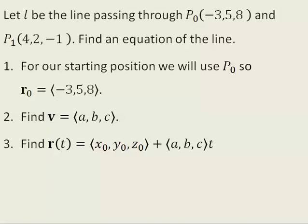For our starting position, we can just use p-naught. So if we choose p-naught to be our starting position, r-naught would be the vector (-3, 5, 8).